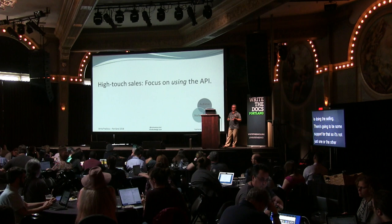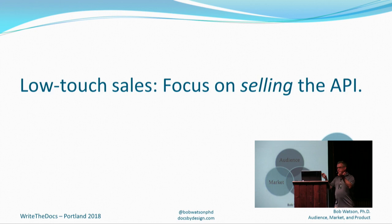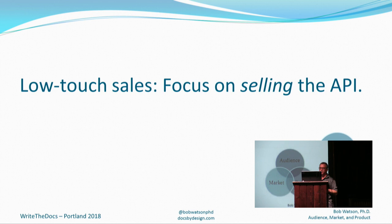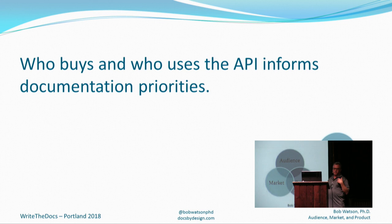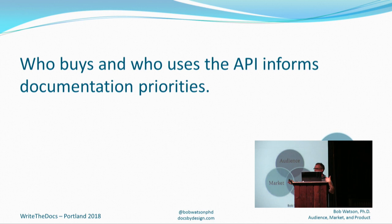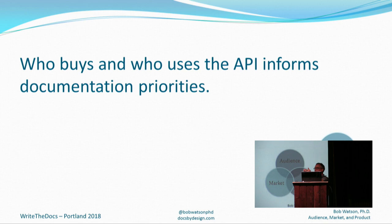For low touch sales — no dedicated sales team, word of mouth, open source — you need a clear value proposition and a clear hello world case so that people can see it does what they want and try it to verify that. Another factor is who buys versus who uses. Sometimes that's the same person, as in the low touch case where you find it, download it, and use it. Sometimes they're separate — you might have an executive team making a purchase because it's a big ticket item and then developers contracted to use it. Know whether those are different or the same, because that'll determine how you structure your content.